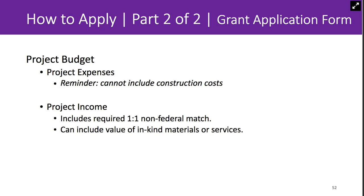Before filling out the budget section, be sure you have reviewed the 'We Do Not Fund' page of the website to ensure you're not including any ineligible costs, such as construction, in your expenses section. Under income, you will specify the amount you're requesting from the NEA, and you'll also share any confirmed or prospective sources of income that will fulfill the required one-to-one non-federal match. There are lots of really helpful instructions for filling out this section in the GAF instructions PDF.